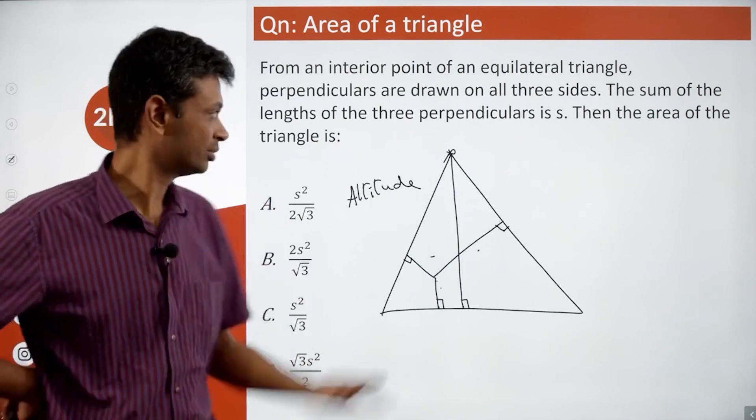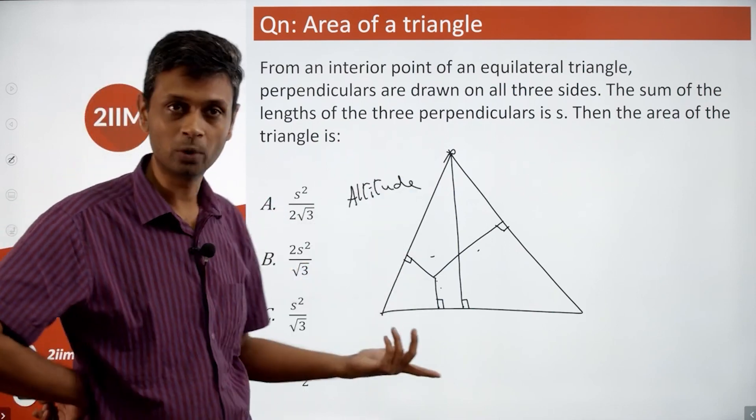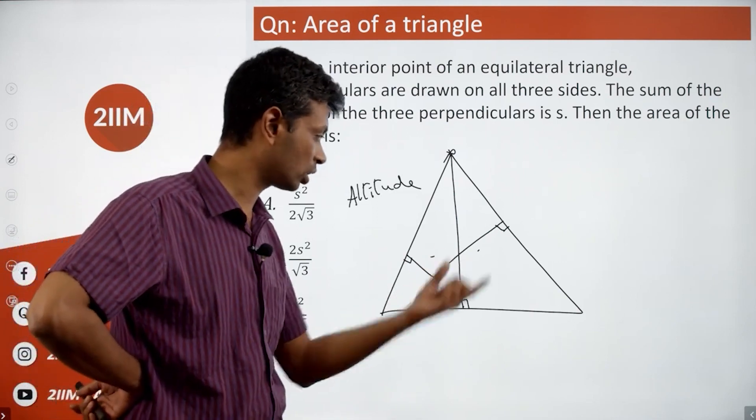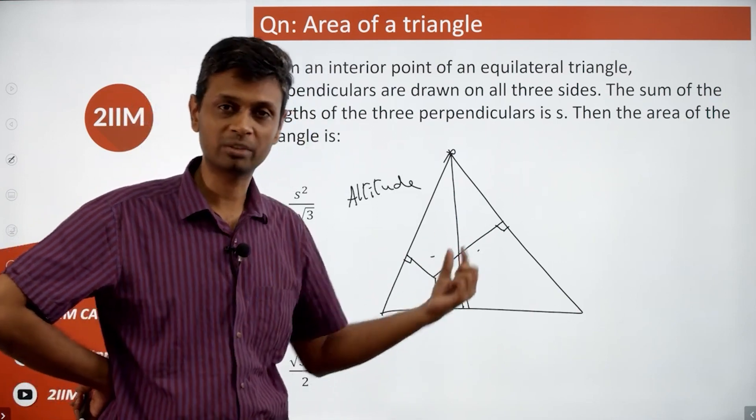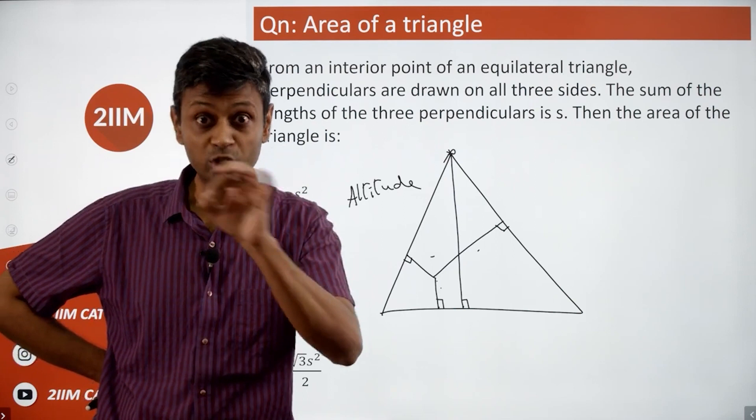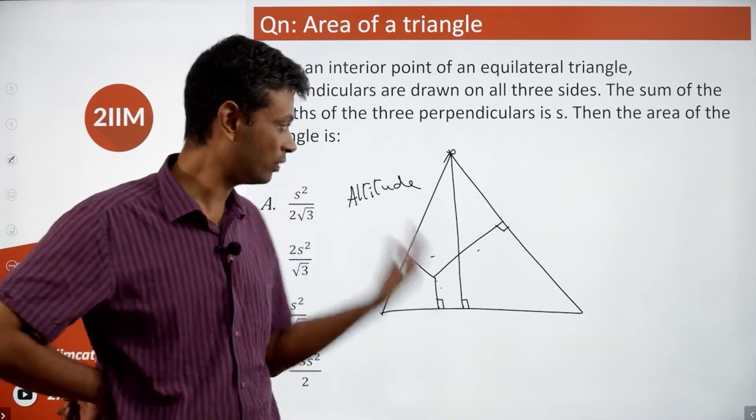But from an exam point of view, you do not need to do that. Pick one point, you are good to go. Or you could have picked the centroid or orthocenter or circumcenter. They are all coincident. From that point, you could have assumed and then done this or you will always come back to this.